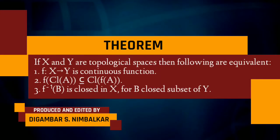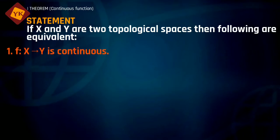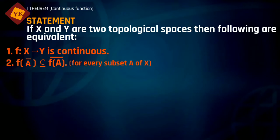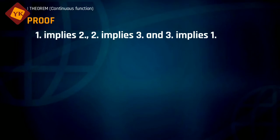Welcome. In this video we will learn the theorem regarding continuous functions. The theorem states that if X and Y are two topological spaces and f is a function from X to Y, then the following statements are equivalent: first, f is a continuous function; second, for every subset A of X, f of A-closure is contained inside the closure of f(A); and third, for every closed set B of Y, the inverse image f⁻¹(B) is closed in X. We will prove that statement 1 implies 2, 2 implies 3, and 3 implies 1.